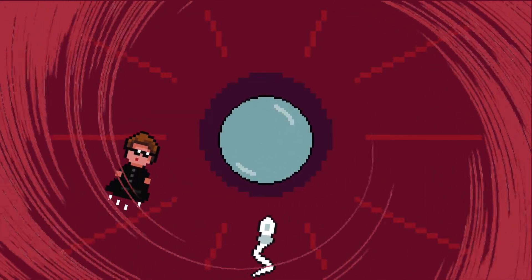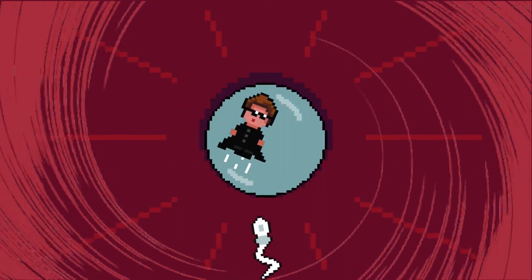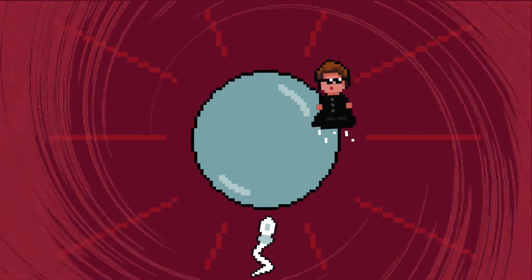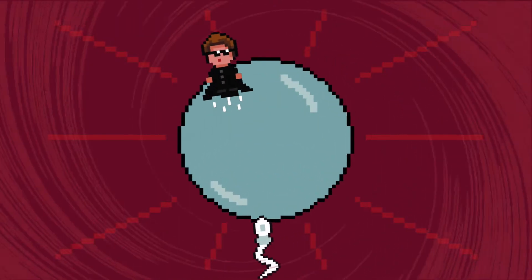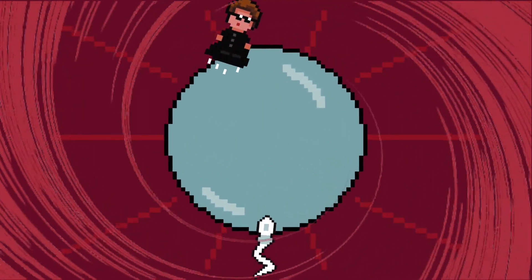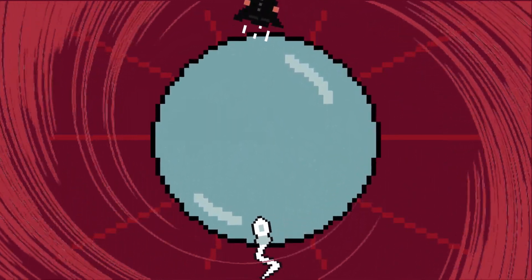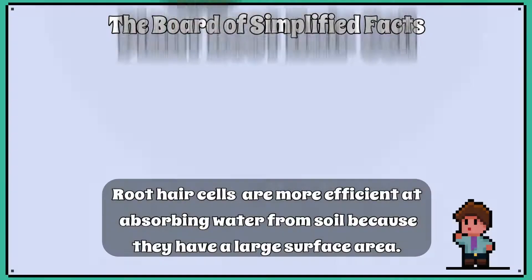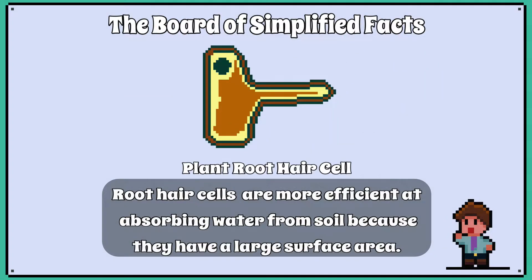Take a sperm cell. They have a strong tail for swimming the long distance to the egg in the fallopian tube, where fertilisation normally takes place. You may have a question where they give you a specialised cell and you'll need to suggest how they are adapted for their function or job.